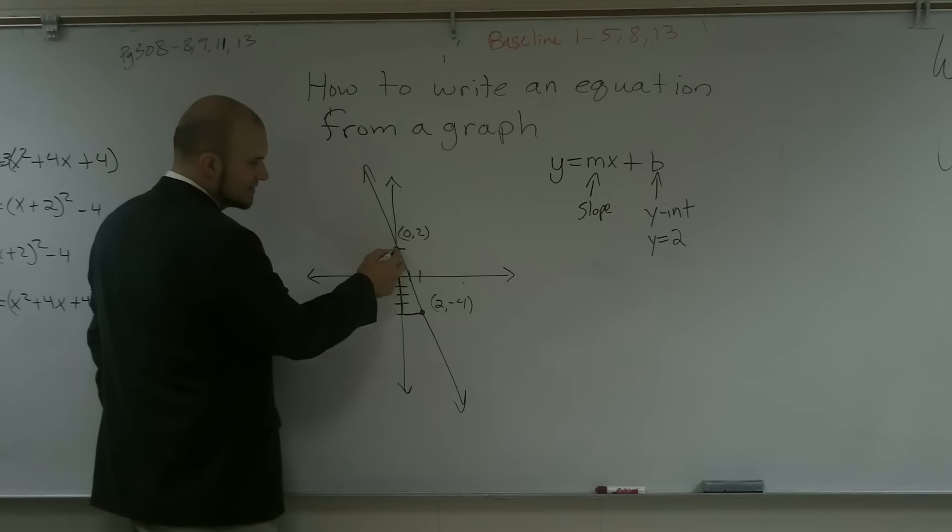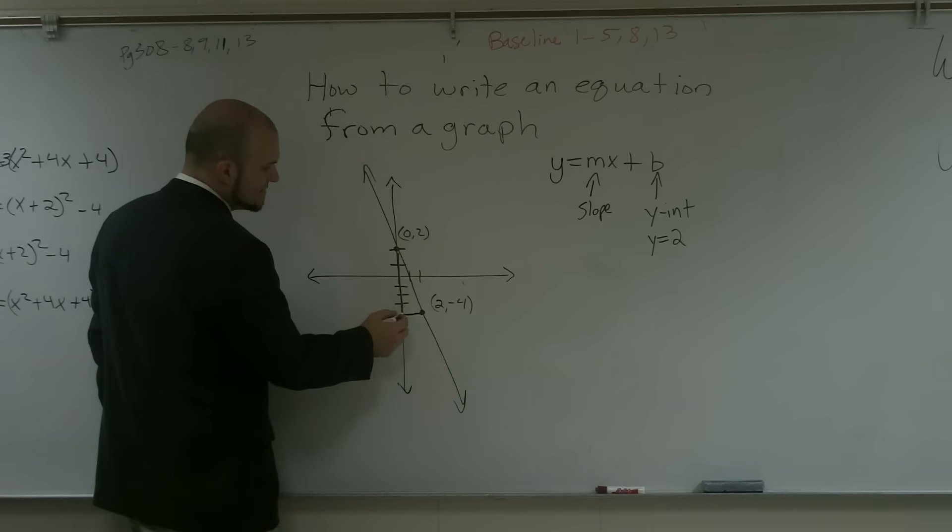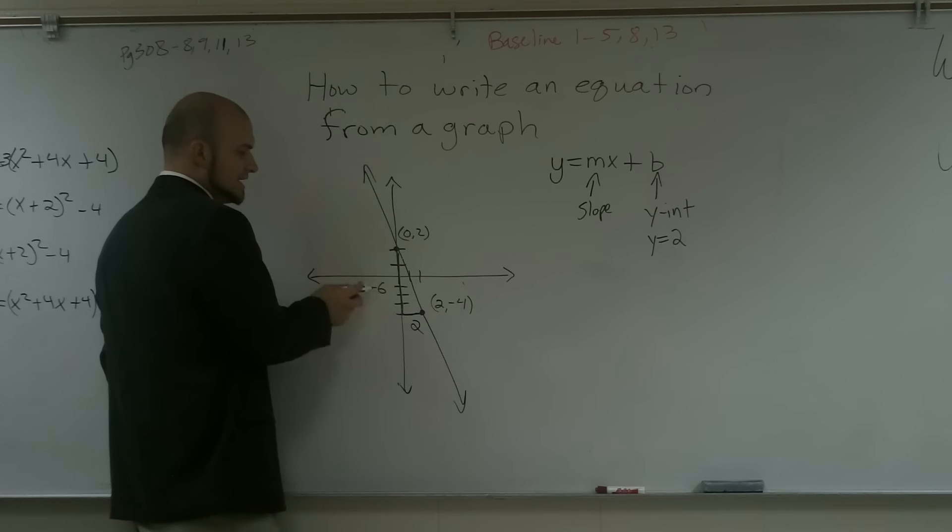So I can say, well, from the left to the right, I'm going down 1, 2, 3, 4, 5, 6, and I'm going over positive 2. So the change in the height is negative 6 over 2.